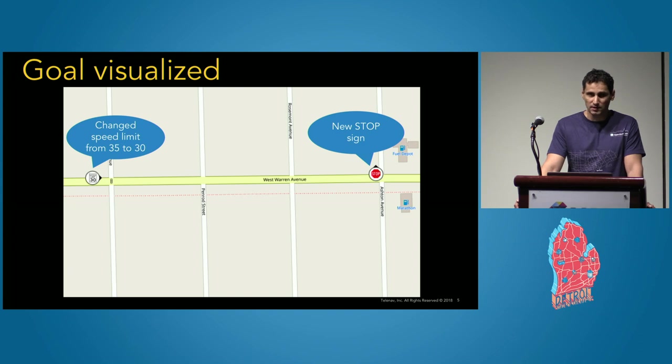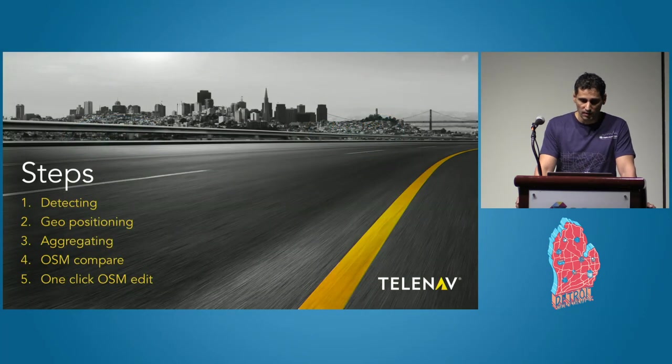Here we can imagine a system capable to automatically detect the changes on the map based on sensor data and images collected on the roads. On the picture is an example of a speed limit and a new stop sign automatically detected on a random road. So we have just defined the goal.